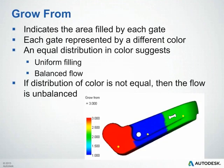The Growth From plot indicates the areas filled by each specific gate on your part, with each gate represented by a different color. An equal distribution of color suggests uniform filling and balanced flow. If the distribution of color is not equal, the flow is typically unbalanced.